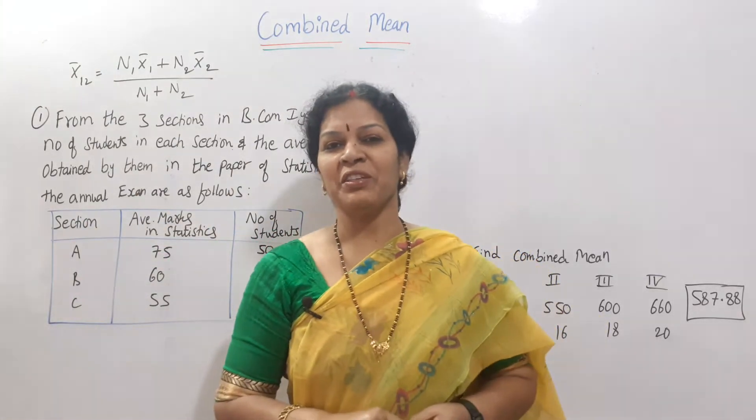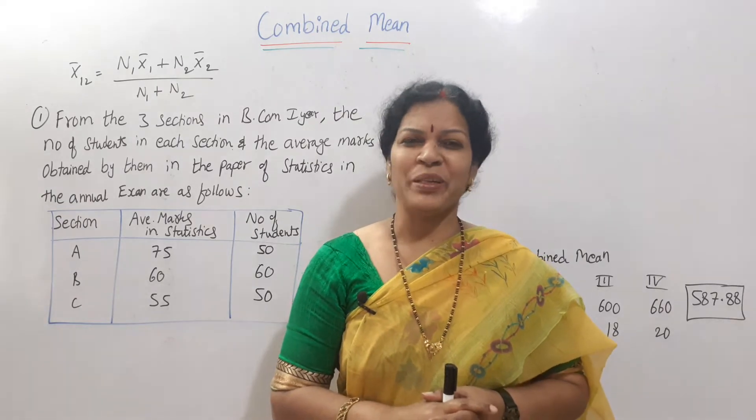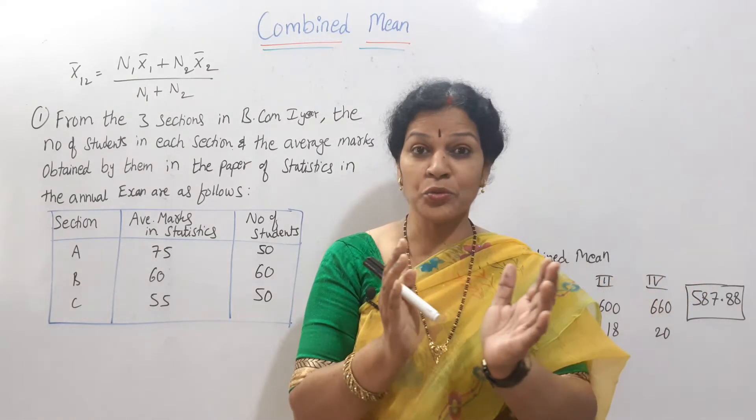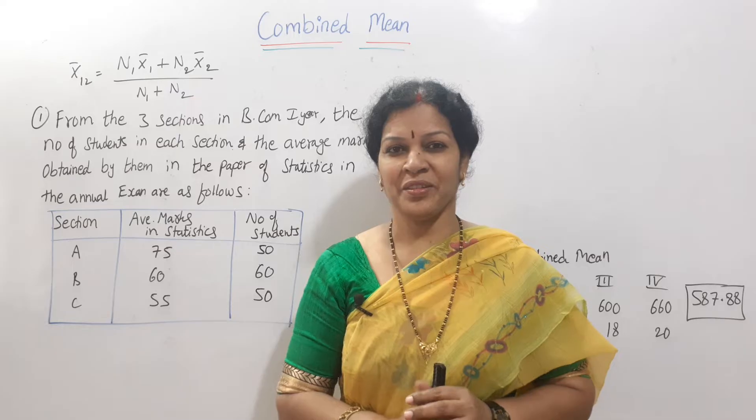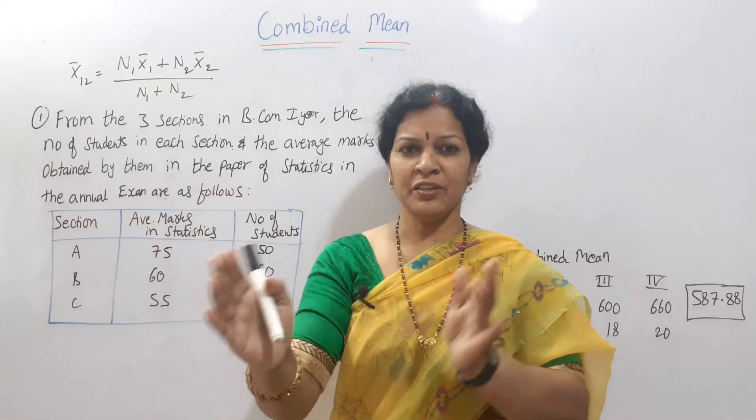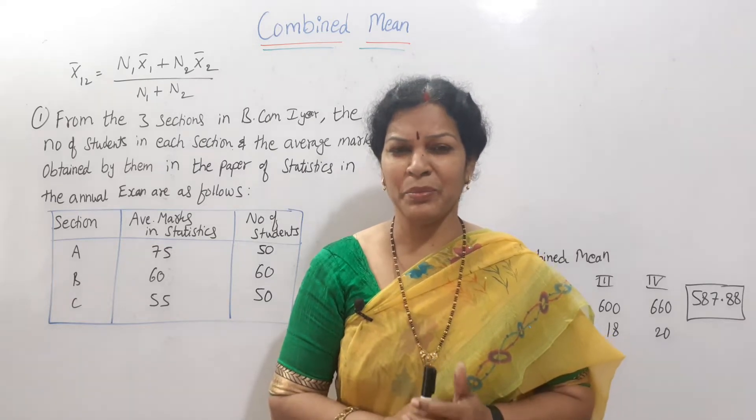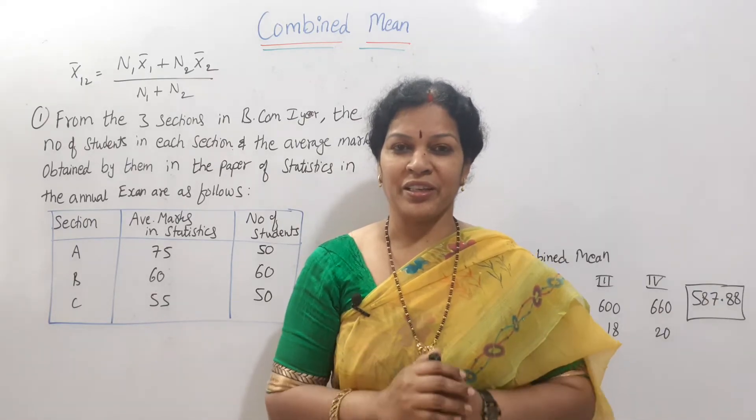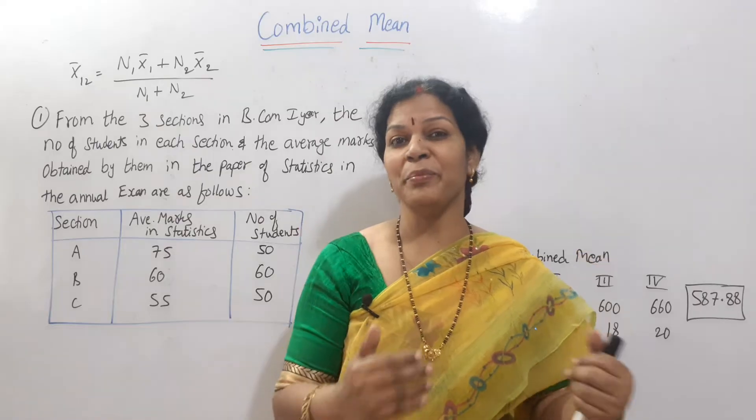Hello dear students, welcome to Devika's Commerce and Management Academy. Today we'll see combined mean. What is combined mean? Generally, say two companies or two classes, two schools, two factories, two branches. Mean is given. Two or three means are separately given. Say factory A, factory B, factory C. Three factories mean is given. Arithmetic mean is given. We have to find out the combined mean, mean of all these three companies.